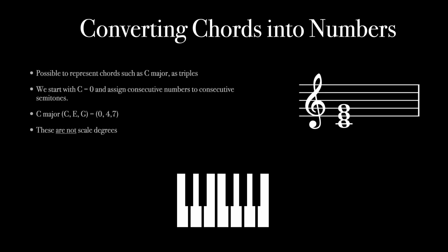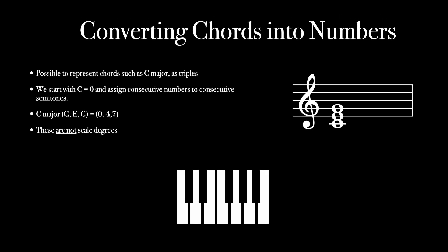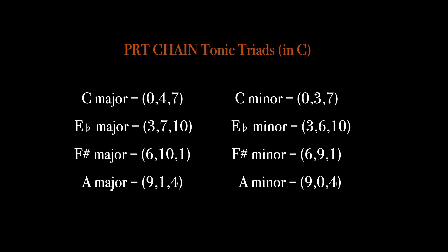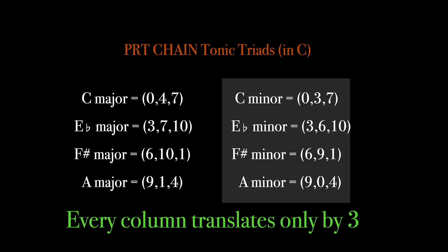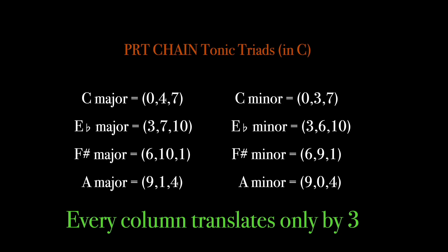We can convert music to numbers using integer notation. We start with C equals zero and assign consecutive numbers to consecutive semitones. C major is zero four seven. From this point, numbers will refer to notes instead of degrees. Here are our eight tonic chords. We can find symmetry. Each of the rows translates only by three. In music words, you can transpose a chord by a minor third and retain its function. Cool.